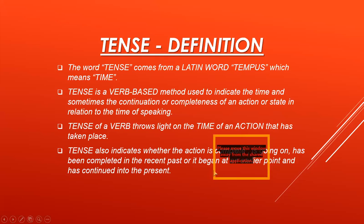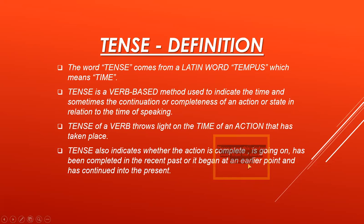Or it began at an earlier point and has continued into the present. This tells us about all four kinds: whether the action is complete — that is present tense or perfect tense — going on — that is continuous tense — has been completed in the recent past — that is perfect continuous tense — or it began at an earlier point, which shows the past tense. So this statement tells us about all four tenses: indefinite tense, perfect tense, continuous tense, and perfect continuous tense.